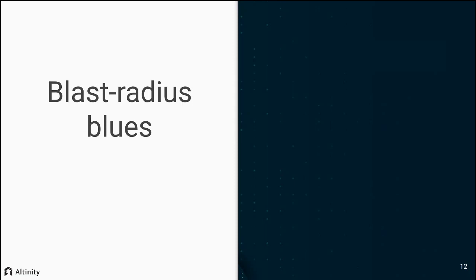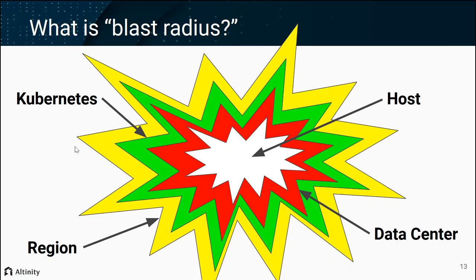The next problem is what I call blast radius blues. The notion of a blast radius is how far away you have to be before you're not affected by a failure — you can think of this as a bunch of concentric circles. If a host fails, anything running on that host and potentially any data attached to the host may disappear. Failures can extend much further: hosts are in racks, racks are in data centers. It is possible to have failures which make data completely inaccessible across a data center — for example, failure of network attached storage or the network itself, which can cause data loss or unavailability.